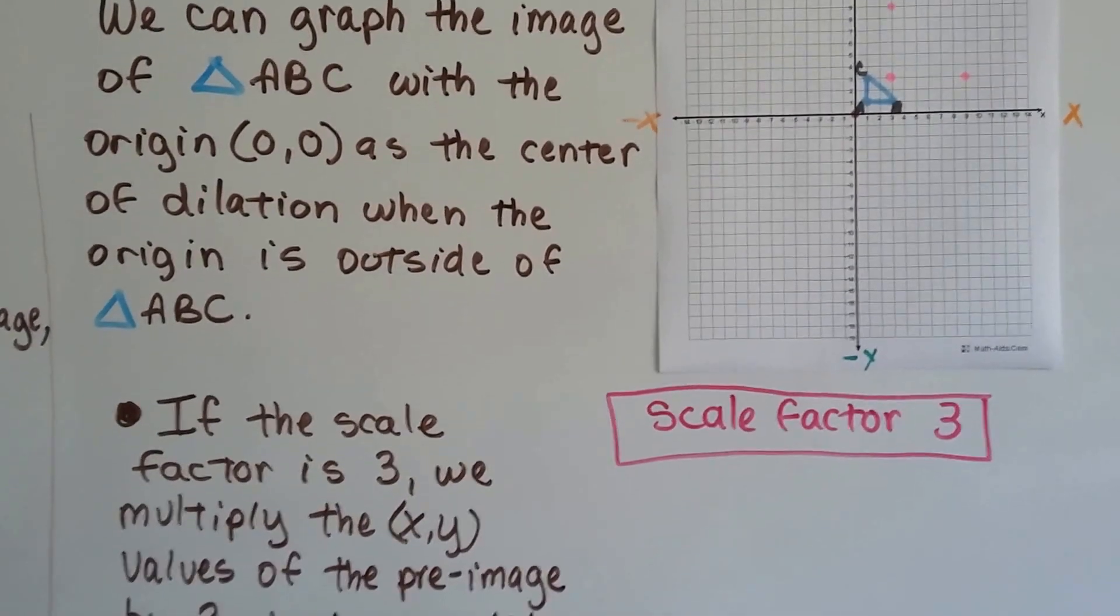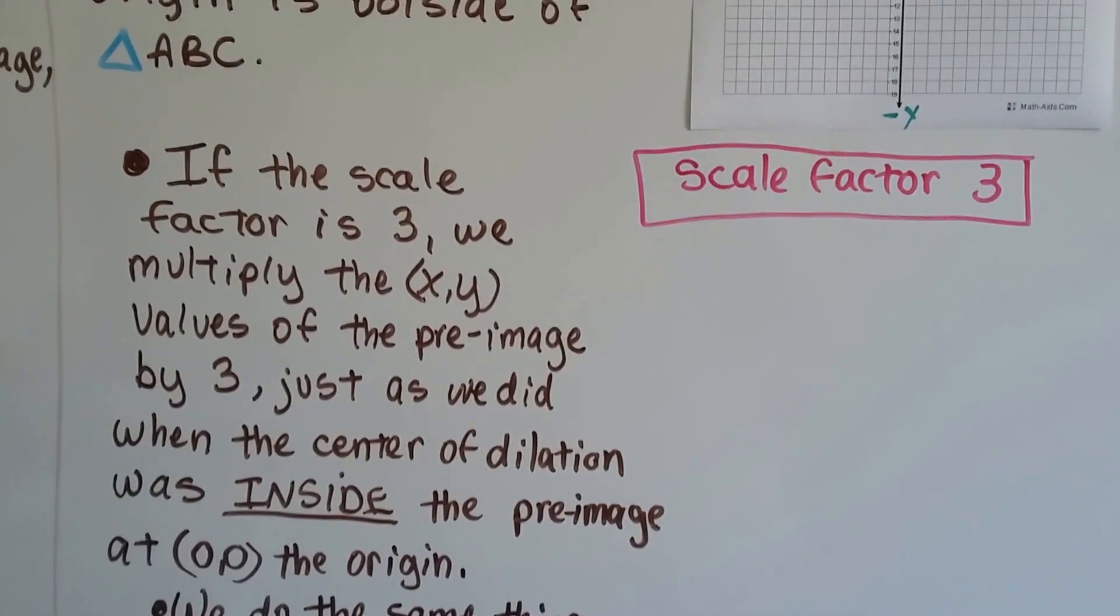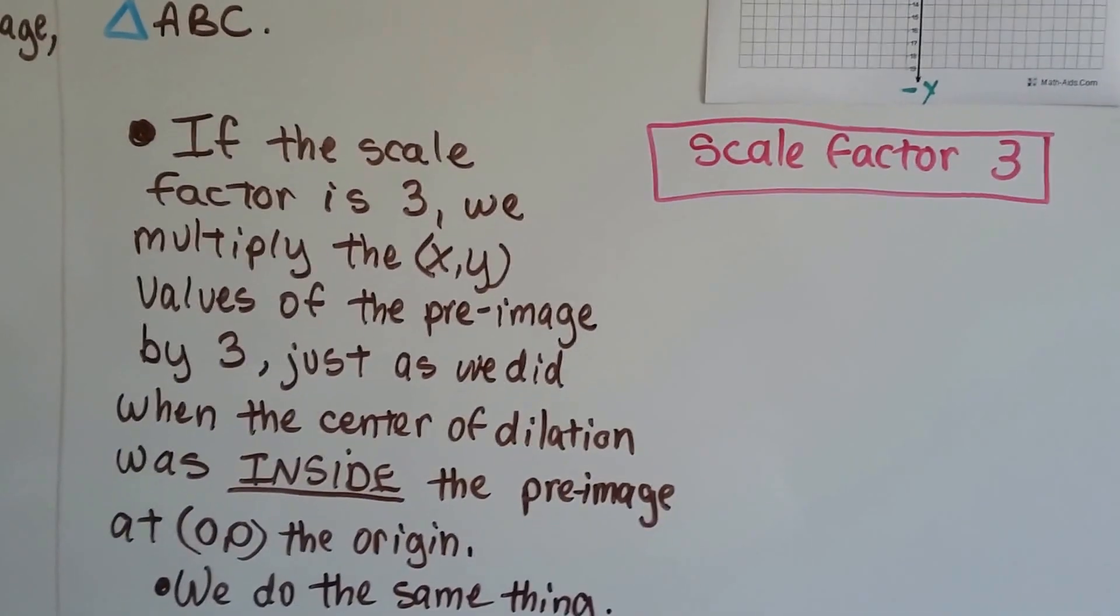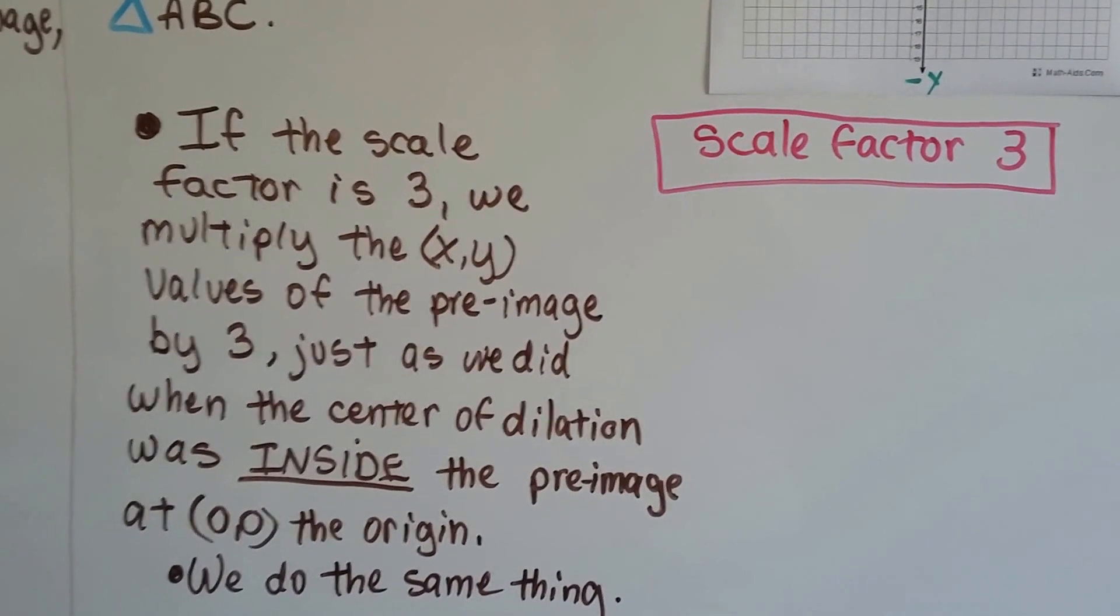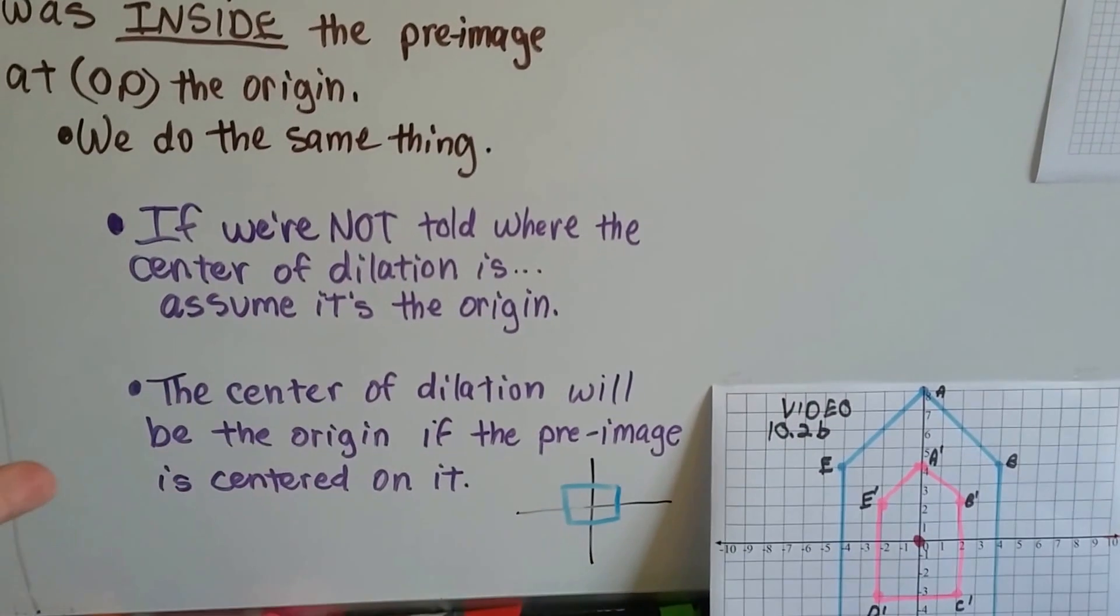Our scale factor is going to be 3, and if the scale factor is 3, we multiply the x,y values of the preimage by 3, just as we did when we did the center of dilation and it was inside the preimage. It's the same thing we did with this one.